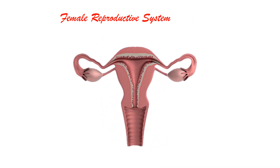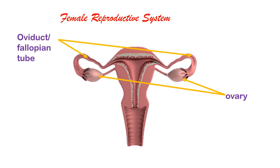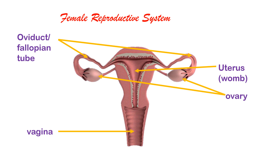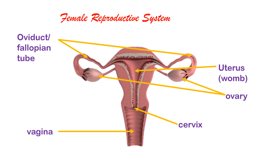The journey of life begins in the female reproductive system. The female reproductive system consists of four organs. The first is a pair of ovaries, second is a pair of oviducts also called the fallopian tube, third is the uterus or the womb, and last is the vagina. The lower part of the womb is called the cervix.